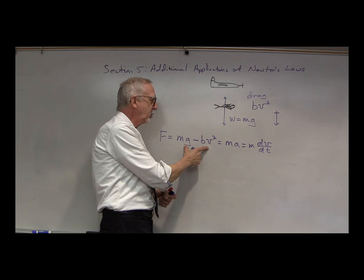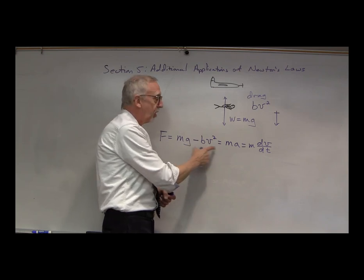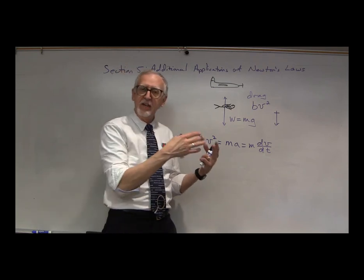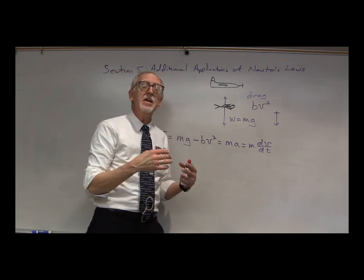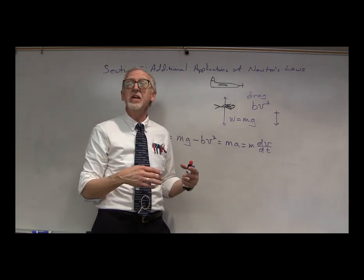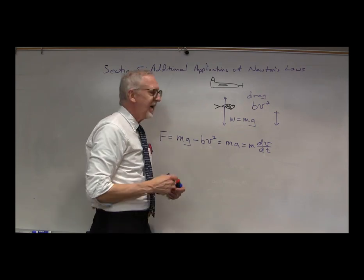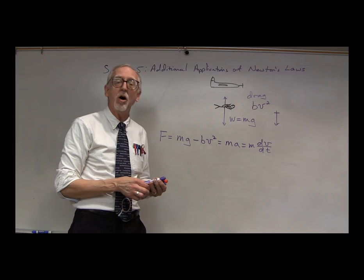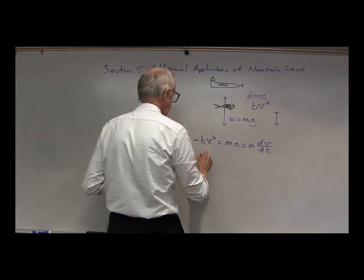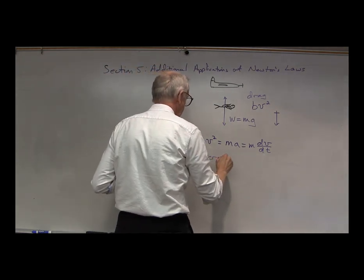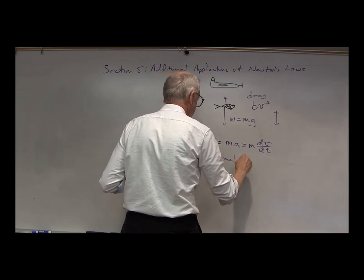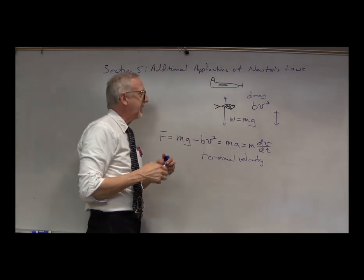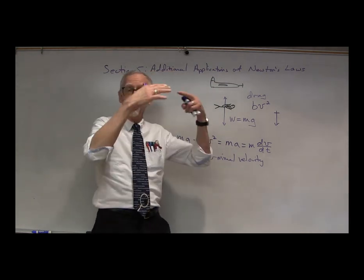What happens when these are equal to each other? This equals zero and dv/dt equals zero, which means the velocity is not changing anymore — v is constant. It means that the person has reached what is called terminal velocity.